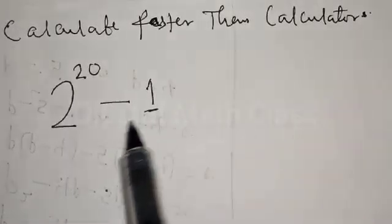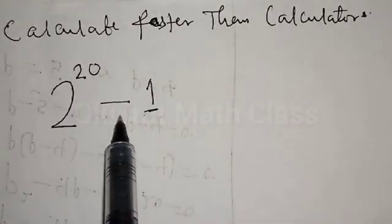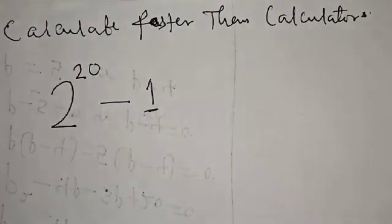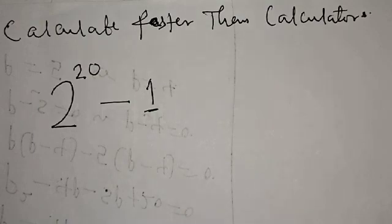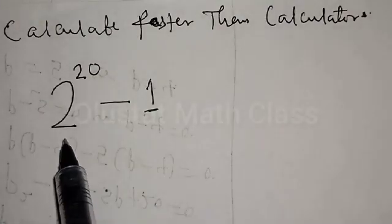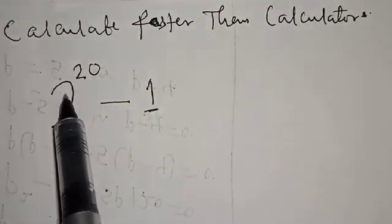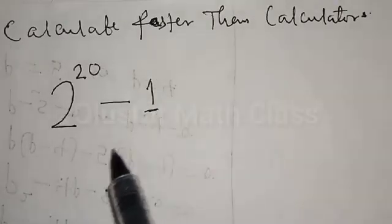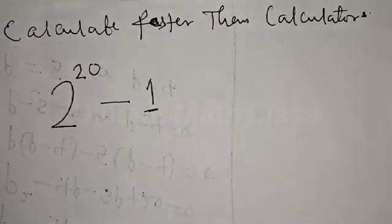Calculate faster than a calculator: 2 raised to power 20 minus 1. Hi everyone, welcome to my class. In this class we want to look at how we can easily calculate 2 raised to power 20 minus 1 without using a calculator.